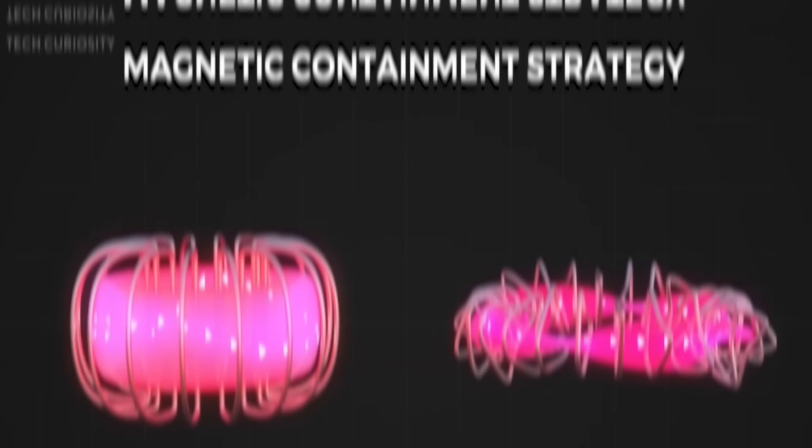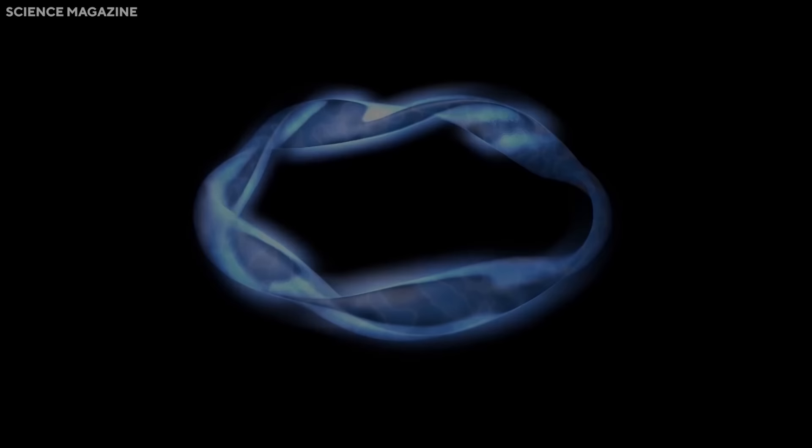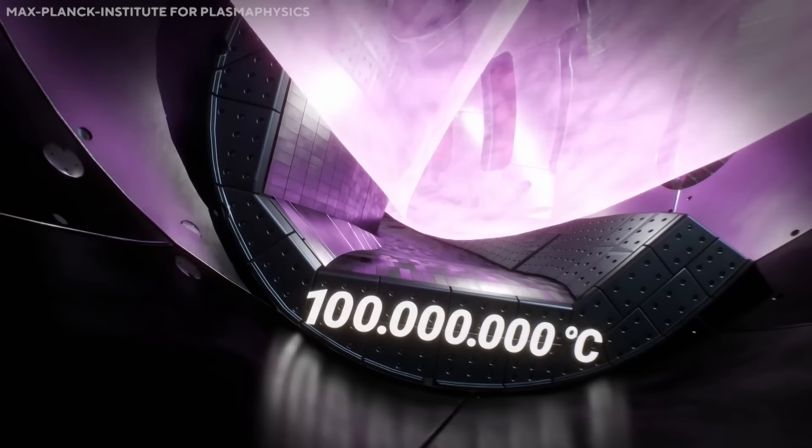The stellarator is actually one of the most fascinating and promising concepts in fusion research. Unlike the more common tokamak, which relies on a current flowing in the plasma to create part of the magnetic field, the stellarator generates the entire magnetic field externally. This means that the stellarator does not need to induce or sustain a plasma current, which can cause instabilities and disruptions in the tokamak. The stellarator can also operate in a steady state mode, without the need for periodic pulses or ramps of the plasma current. This makes the stellarator a potentially more robust and reliable fusion device.